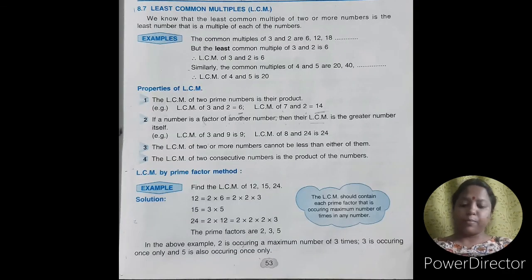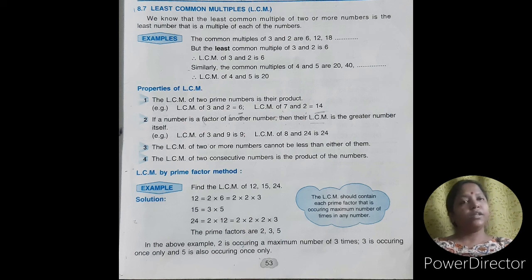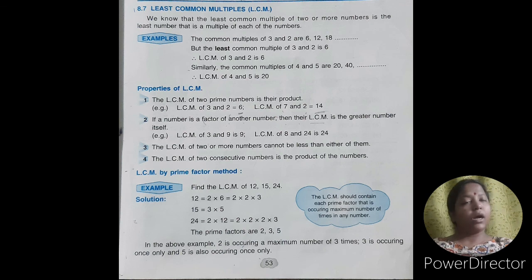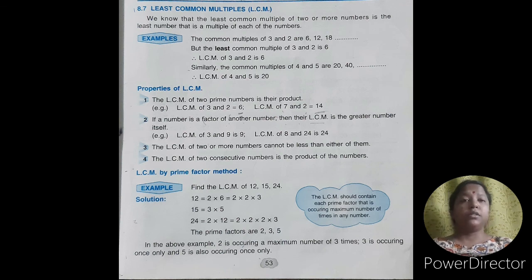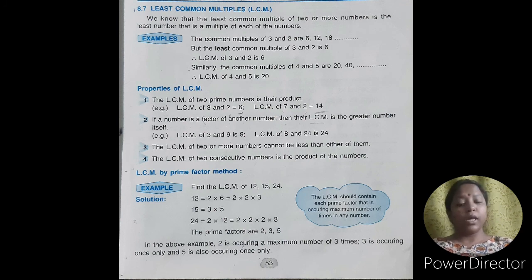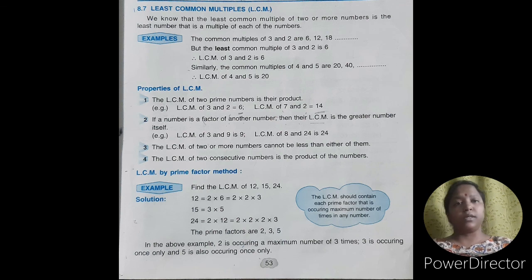Here is an example. Let us find the LCM of 2 and 3. The common multiples of 2 and 3 are 6, 12, 18 and so on. But the least common multiple is 6. So the LCM of 2 and 3 is 6.